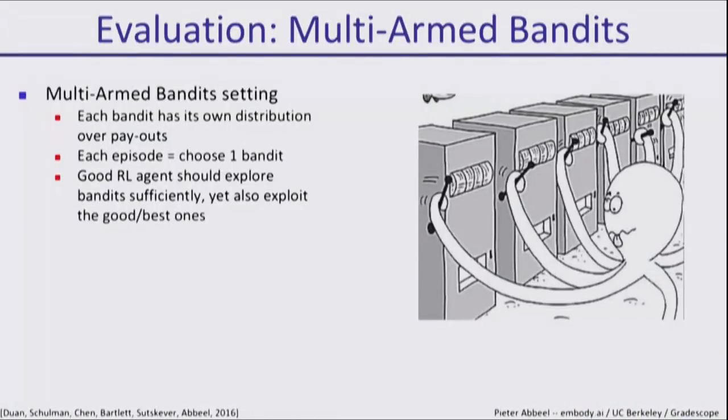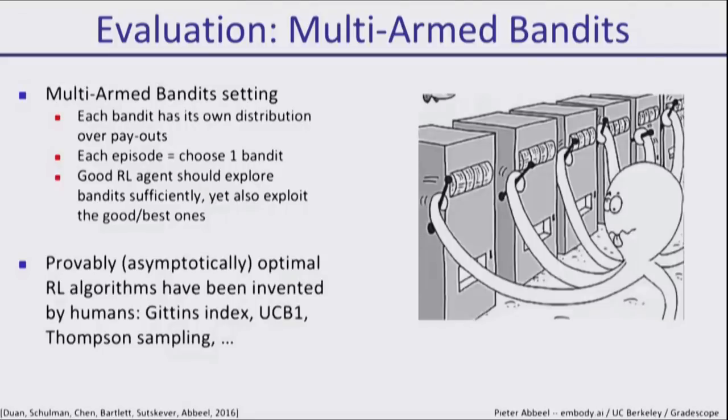Once you have any of these architectures, it's interesting to start looking at how well can they solve problems that humans have already solved. For example, bandit problems, which are canonical reinforcement learning test problems where you choose at any given time a bandit to play. That bandit has a probability of payoff, but you don't know ahead of time what the probability is for each bandit. You need to pull some bandit arms, figure out which one has higher probability of payoff, keep pulling that one. Humans, actually expert humans, have designed asymptotically optimal algorithms for this kind of problem.